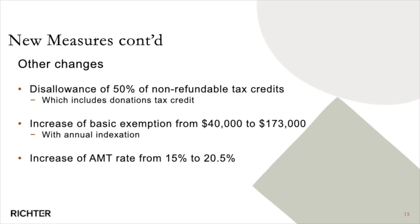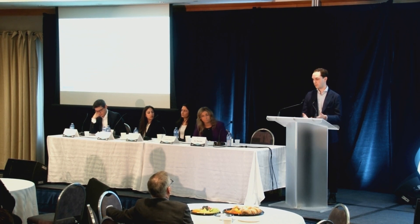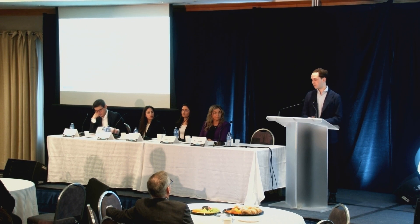The AMT rate will increase from 15% to 20.5%. The only good portion of these changes is that the basic exemption will increase from $40,000 to approximately $173,000 and will be indexed on a year-to-year basis. This means your first $173,000 will not be subject to the AMT rules, which aligns with the government's intent that AMT will be applicable against high-income earners only.